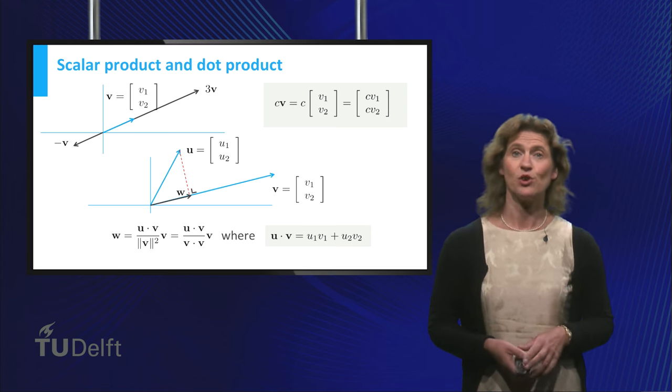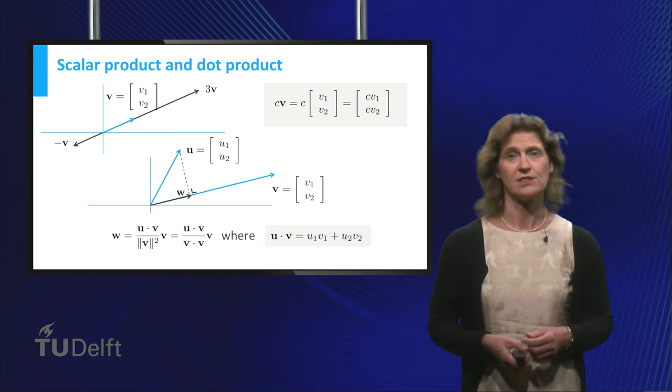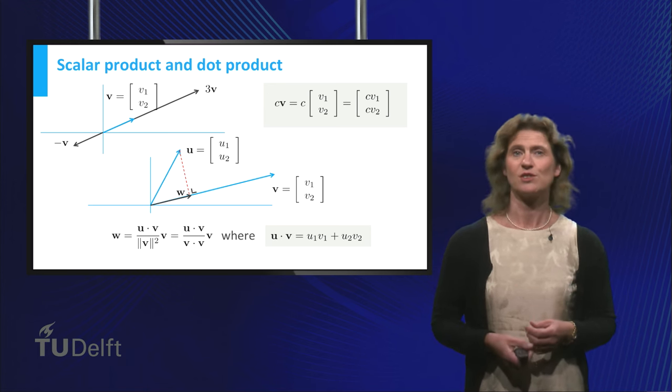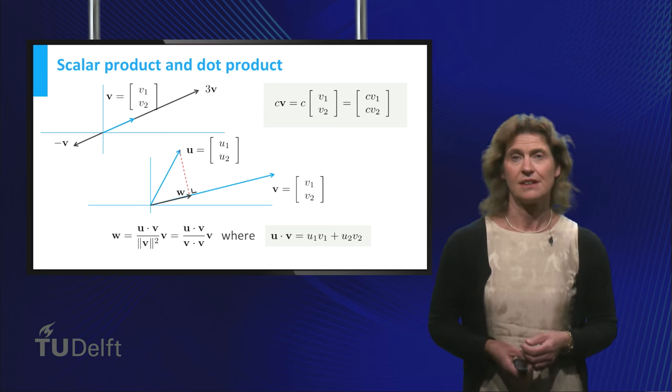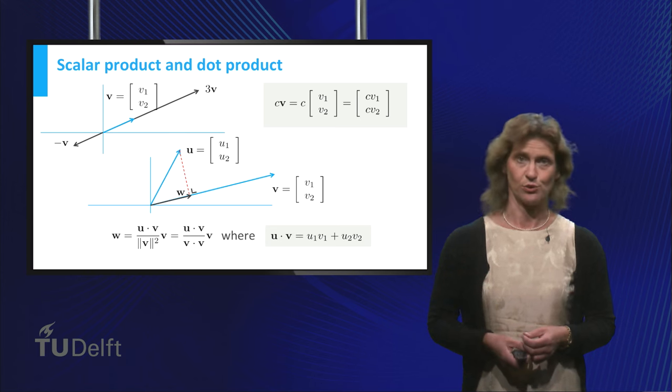In this video, you will find out about another operation on two vectors, whose result is another vector having some nice properties. This operation is called the cross product or the outer product.